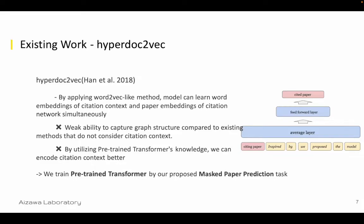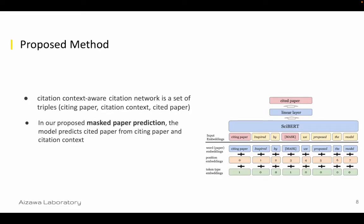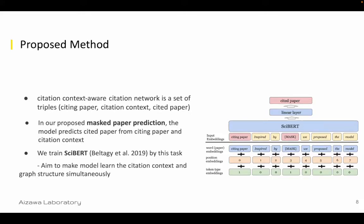In order to deal with these problems, we trained a pre-trained transformer by a proposed masked paper prediction task. In this proposed masked paper prediction task, suppose that a citation context-aware citation network is a set of triples: citing paper, citation context, and cited paper. The model predicts the cited paper from the citing paper and citation context. By fine-tuning pre-trained SciBERT on this task, we make the model learn citation context and graph structure simultaneously.